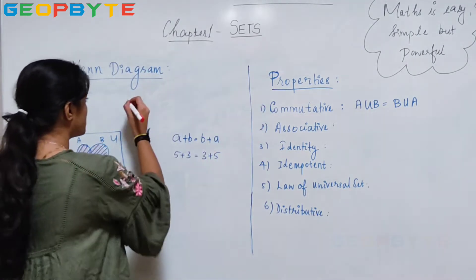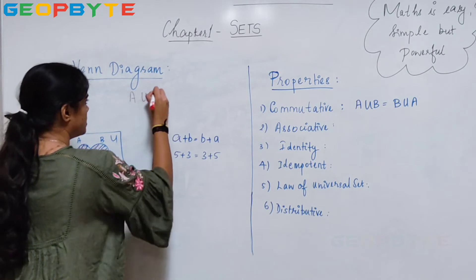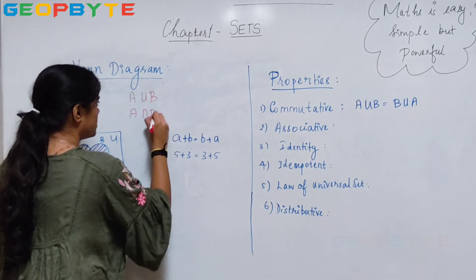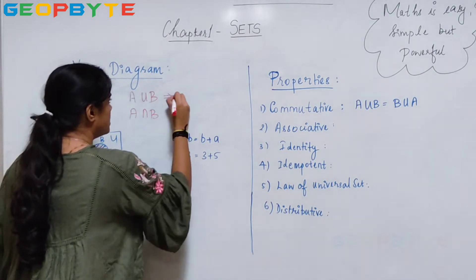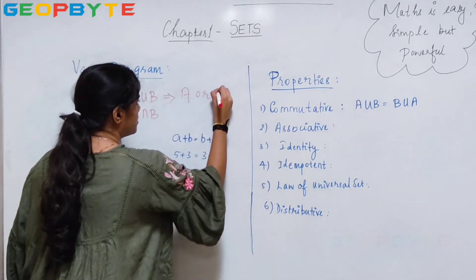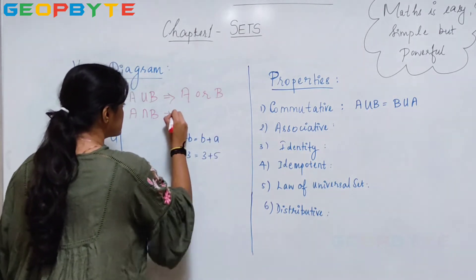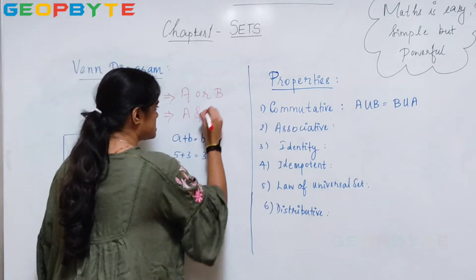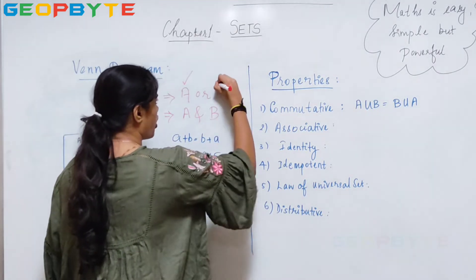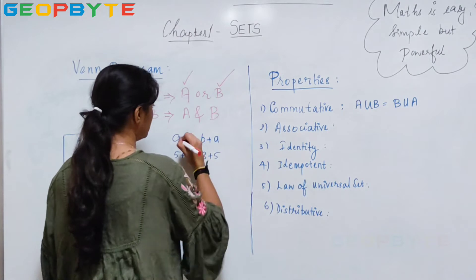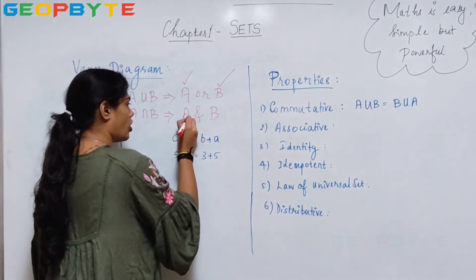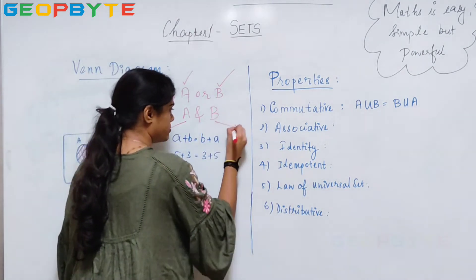So in order to remember what A union B or A intersection B is: A union B means A or B — the element should be either in A or in B. Whereas A intersection B means A and B — it should be in both A and also in B.